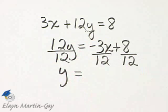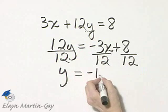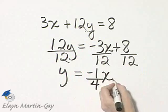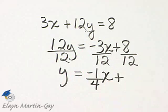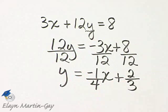Negative 3 and 12—there's a common factor of 3. Negative 3 divided by 3 is negative 1, and 12 divided by 3 is 4. I still have x plus... Here, there's a common factor of 4. 8 divided by 4 is 2, and 12 divided by 4 is 3.